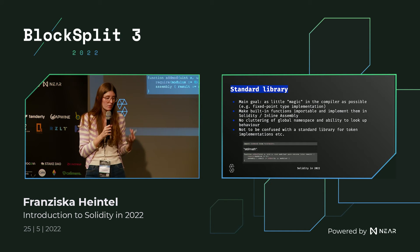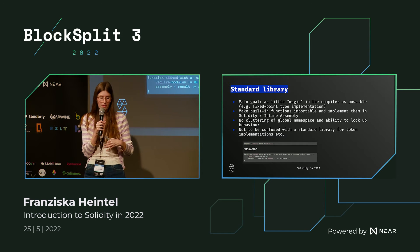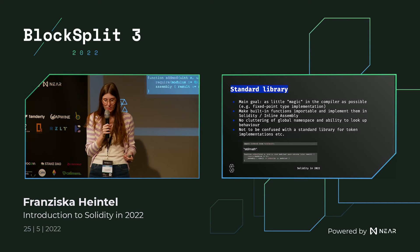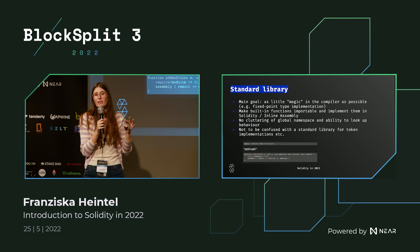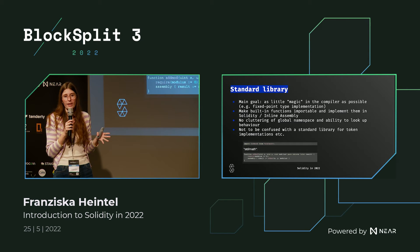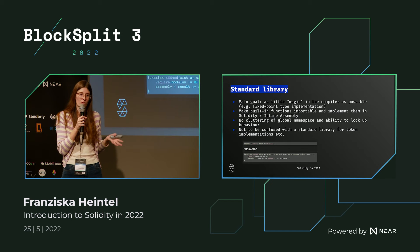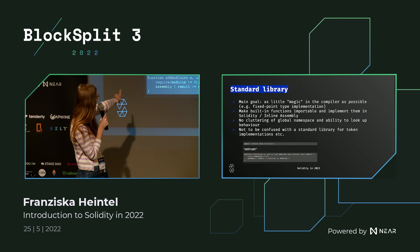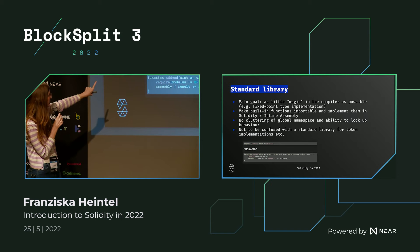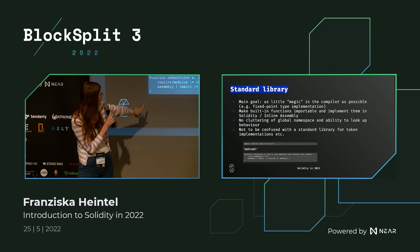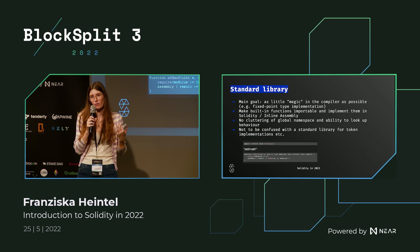What we want to achieve with this is to make built-in functions importable and implement them in Solidity or assembly, meaning no cluttering of the global namespace and the ability to look up the behavior. This should not be confused with another kind of standard library — more like a token standard or implementations like the OpenZeppelin library. As an example, you could say 'import standard math' and receive the relevant output, which also helps users understand more of the compiler internals.